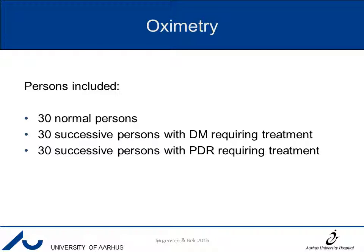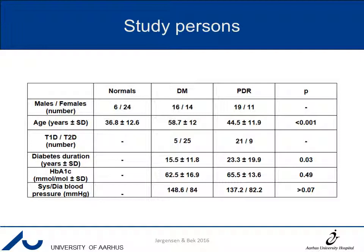In this study, 30 normal persons were included, as well as 30 successive persons with maculopathy requiring treatment, and 30 successive persons with proliferative diabetic retinopathy requiring treatment. The background characteristics are shown here. The diabetes duration was longer for the group of proliferative patients, and the age groups were also different for all three groups.